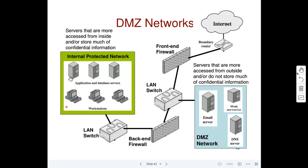That way you reduce the traffic reaching your internal protected network. Not only that — if an attack happens, the servers running on the DMZ network will bear the brunt of the attack; they will be the first set of machines to face it. Once you see that your DMZ network is attacked, you can make the back-end firewall block all packets from penetrating further and essentially shut down access.